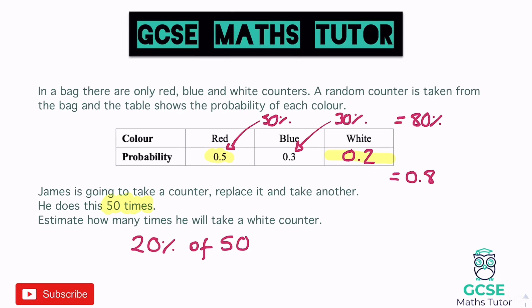All we've got to do is find 20% of 50. Start by finding 10%: 10% of 50 equals 5. Then 20% is double that, so 20% of 50 equals 10. That's our final answer: 10.